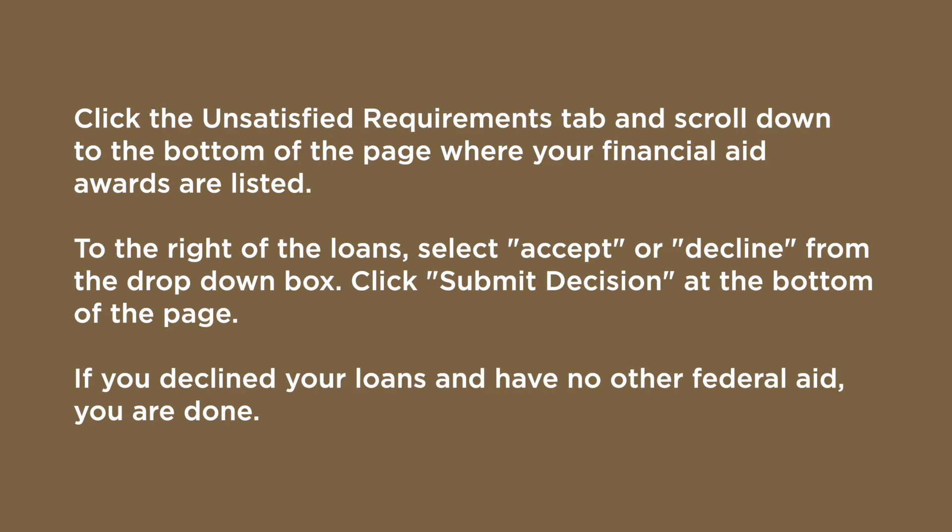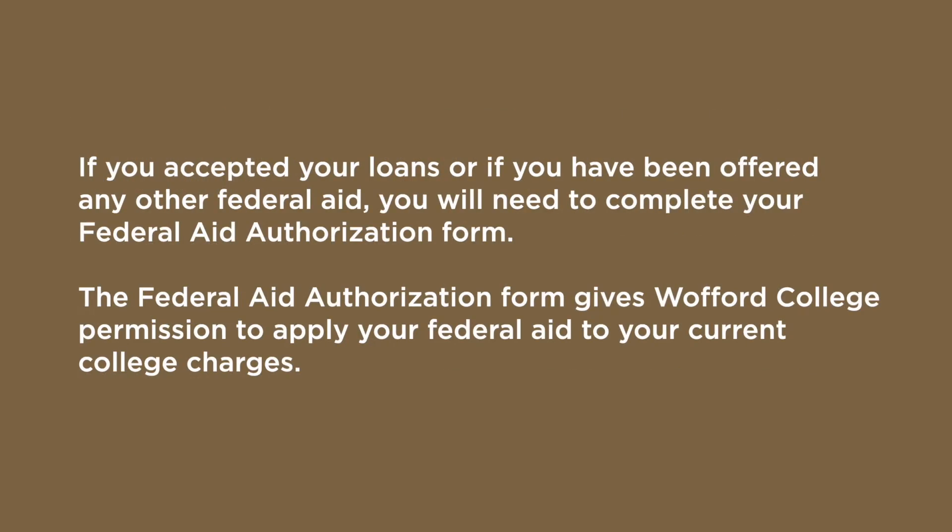To the right of the loans, select Accept or Decline from the drop-down box. Click Submit Decision at the bottom of the page. If you declined your loans and have no other federal aid, you are done.